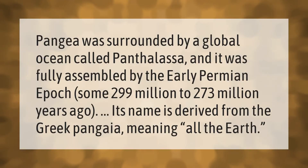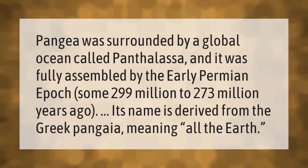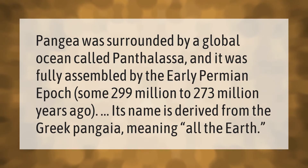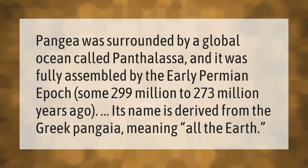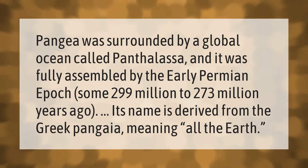Pangea was surrounded by a global ocean called Panthalassa, and it was fully assembled by the early Permian epoch, some 299 million to 273 million years ago. Its name is derived from the Greek 'pangaea,' meaning 'all the earth.'